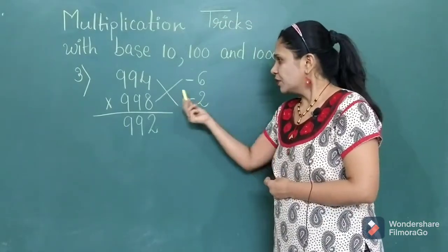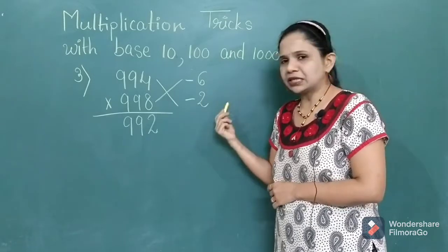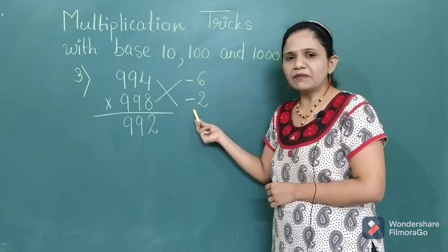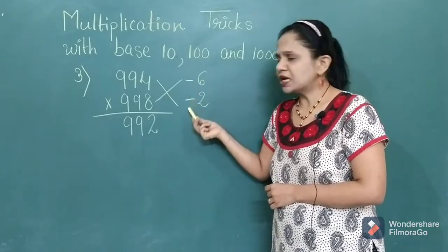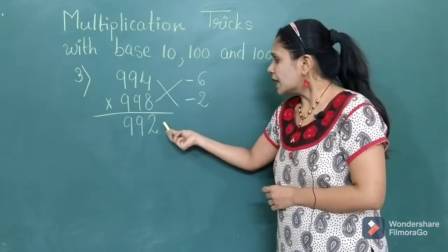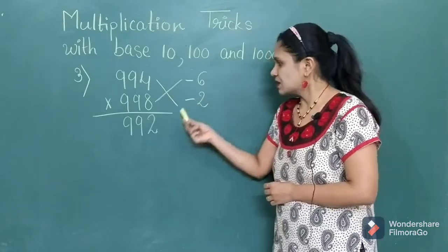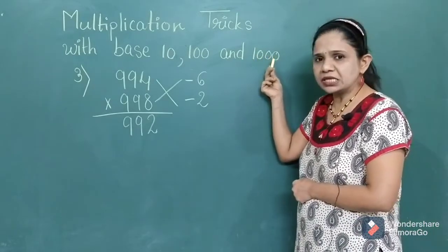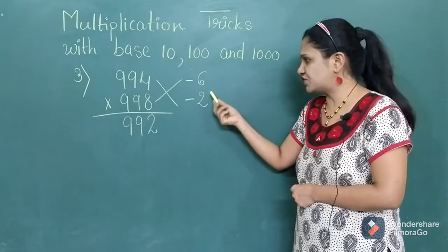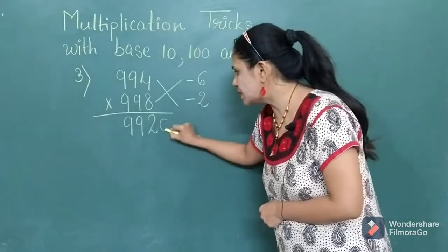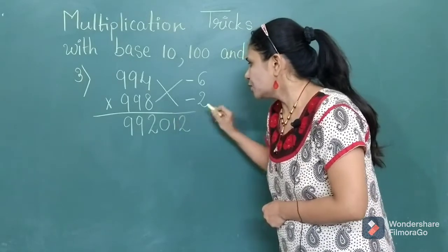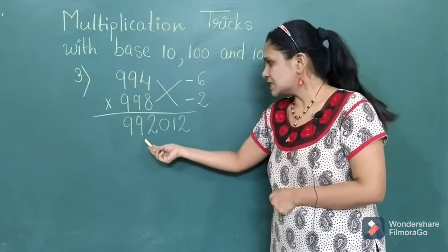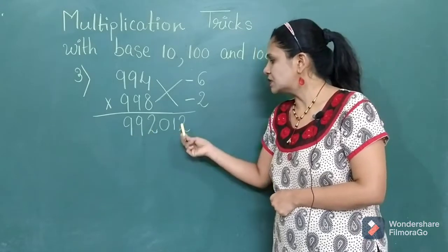Now the next step: multiply the newly written numbers. So minus 6 multiplied by minus 2. Minus times minus gets plus, so 6 twos are 12. But I cannot write 12 as it is. Why? Because the base number is 1000 and 1000 carries 3 zeros, so we want the number in 3-digit form. For that, I will just put a 0 in front of 12, making it 012. So 994 multiplied by 998 gives you the answer 992,012.